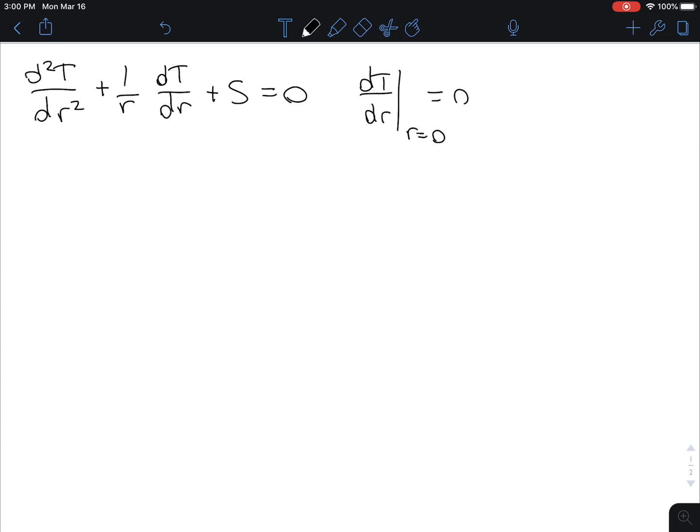there's no derivative, or the derivative of temperature with respect to R is zero at the center of the rod, and the temperature at the edge of the rod of radius 1 is 300 Kelvin.